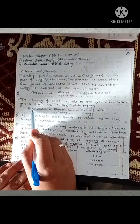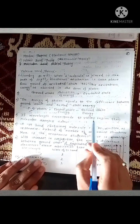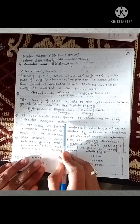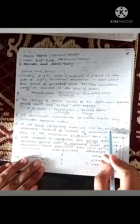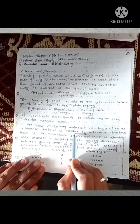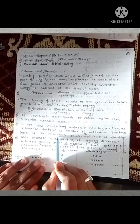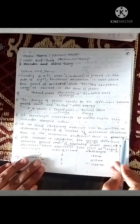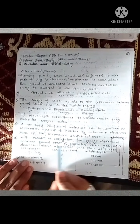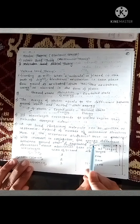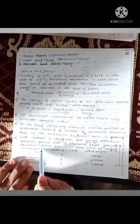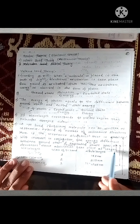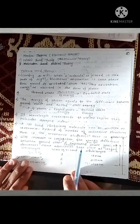If the wavelength associated with the energy of the photon corresponds to the visible region, then the molecule appears colored. A pi bond-containing molecule can be written as a resonance hybrid of a number of resonance structures. More resonance structures means greater stability. With an increase in conjugation, the energy difference between the ground state and excited state decreases, and hence absorption takes place at a longer wavelength.